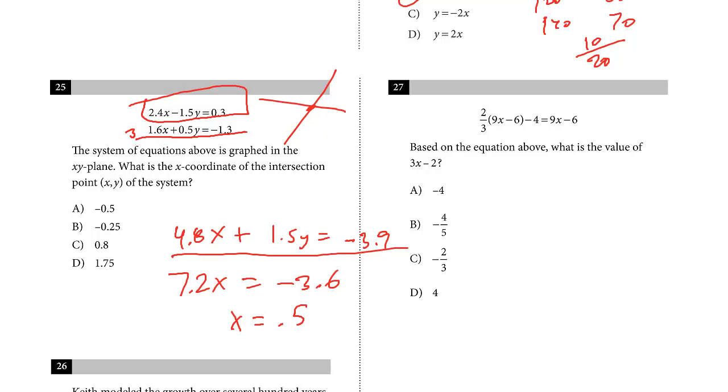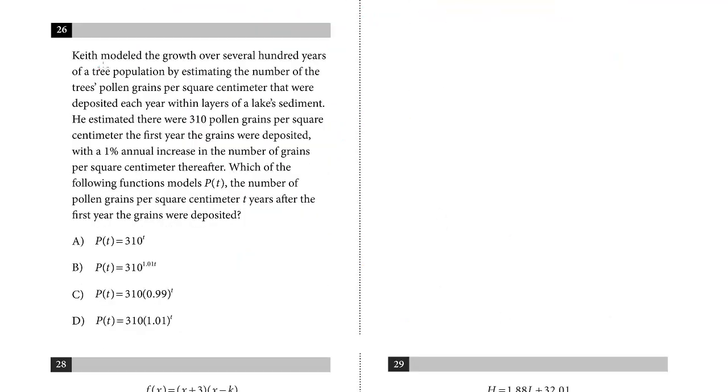All right, one last question on this page. We do number 26. Keith modeled the growth over several hundred years of a tree population by estimating the number of tree pollen grains per square centimeter that were deposited each year within the layers of a lake's sediment. He estimated there were 310 pollen grains per square centimeter the first year the grains were deposited, with a 1% annual increase in the number of grains per centimeter thereafter, which of the following functions models P(t), the number of pollen grains per square centimeter t years after the first year the grains were deposited.